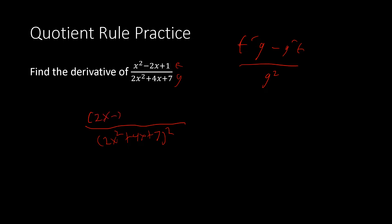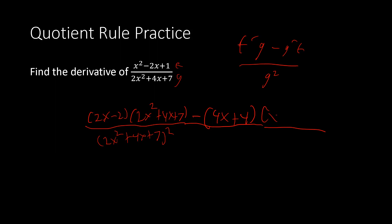Now f' is 2x − 2 (using the power rule), and g is 2x² + 4x + 7. Then minus g'·f: g' is 4x + 4, and f is x² − 2x + 1. I found these derivatives using the power rule. Feel free to pause or slow the video down. This messy expression is our final answer.